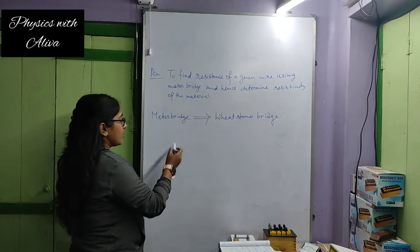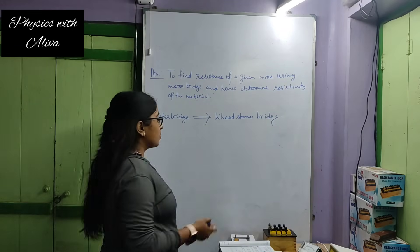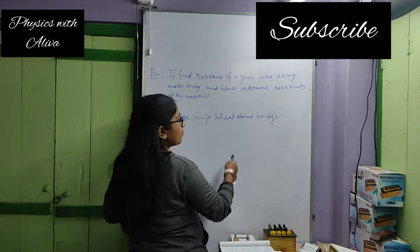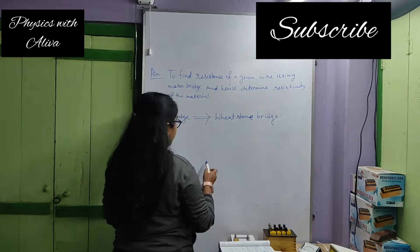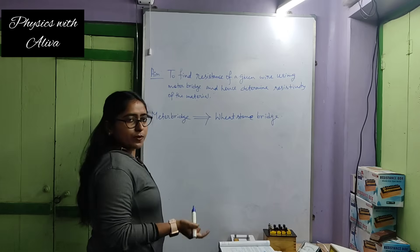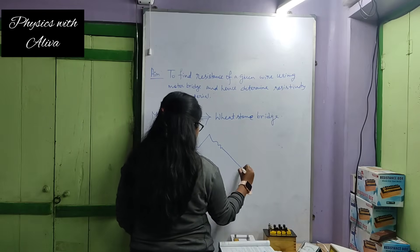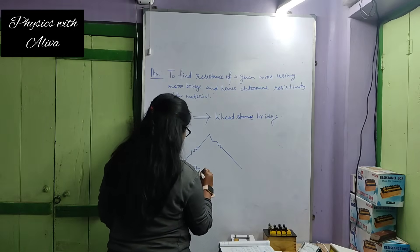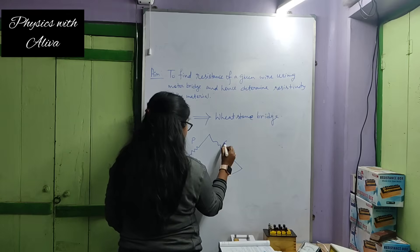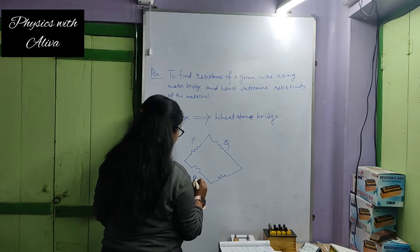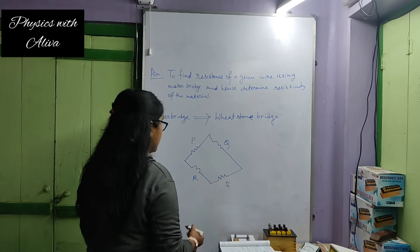First we have to understand the principle of the meter bridge. The meter bridge works on the principle of Wheatstone bridge. In a Wheatstone bridge circuit, four resistances are there: P, Q, R, and S.